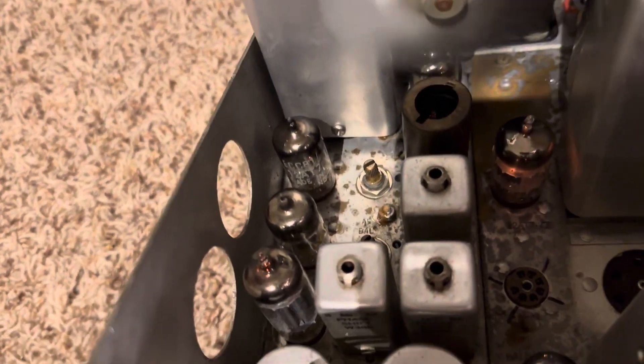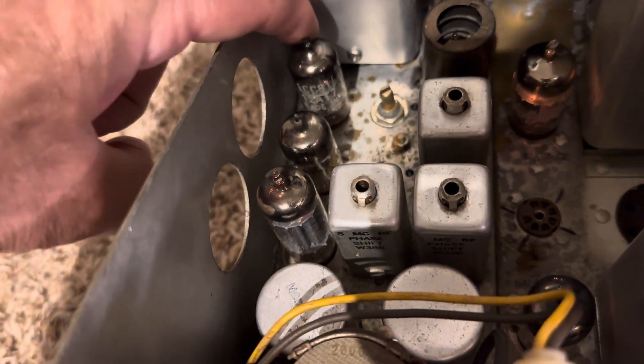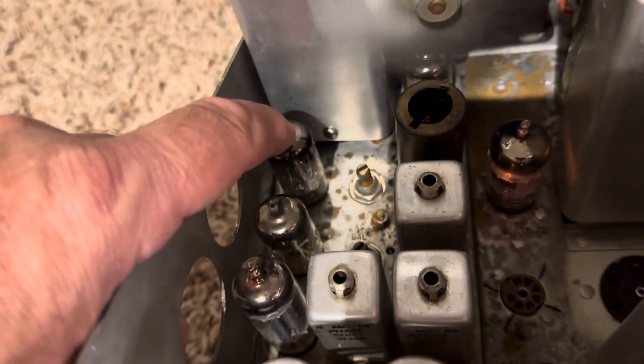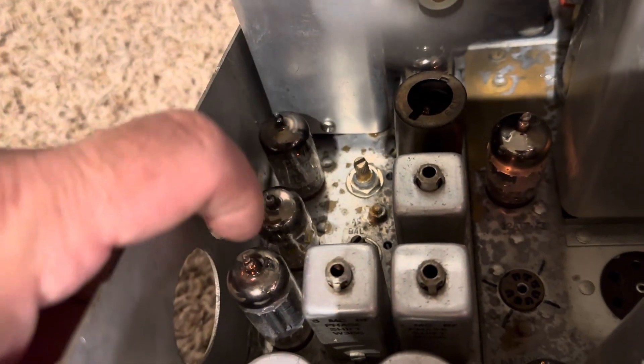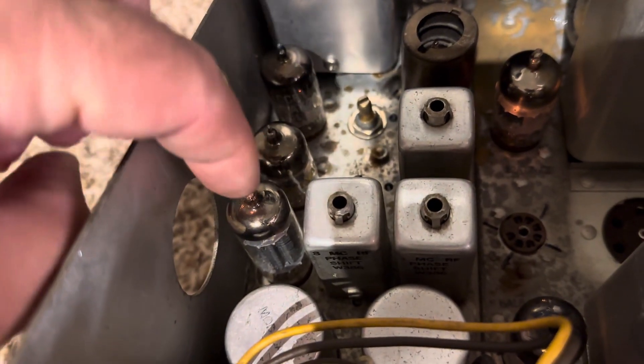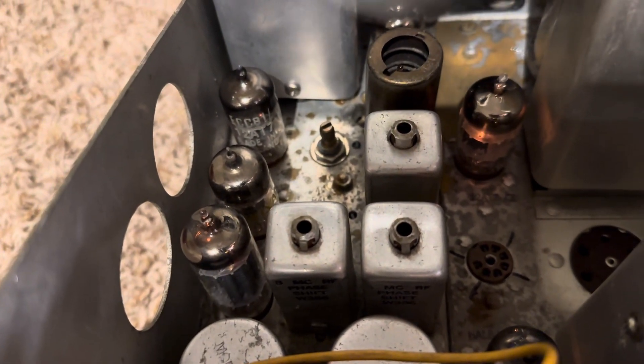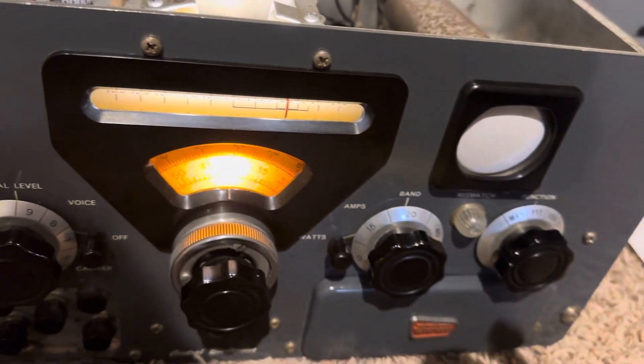I also replaced these three tubes: 12A7, 12A7, 12BY7. These two are audio stages, this one is the modulator. So I would think this tube is the most important, but anyway those are all brand new, supposedly from new old stock on eBay. So here we go, I'm in AM mode right now.